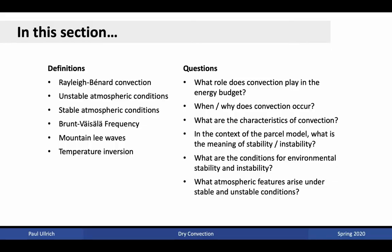In this section, we're going to define Rayleigh-Bernard convection, unstable atmospheric conditions, stable atmospheric conditions, Brunt-Väisälä frequency, mountain lee waves, and temperature inversion. The key questions that will be addressed are: what role does convection play in the energy budget? When and why does convection occur? What are the characteristics of convection? In the context of the parcel model, what is the meaning of stability and instability? And what are the conditions for environmental stability and instability? Finally, what atmospheric features arise under stable and unstable conditions?